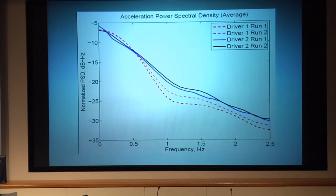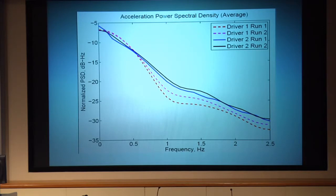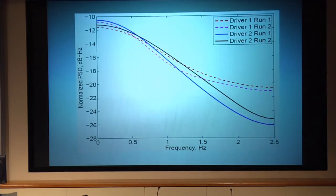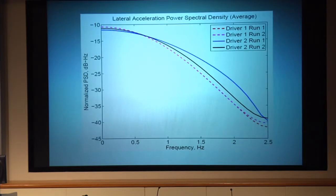We took a power spectral density of the acceleration across several different accelerations and averaged them together. And indeed, you do see a demarcation — a difference between the two students. There's enough of a difference that as you gather more data, you could determine there's a strong personality to the way each person drives. We're working with the same car here, but we hope to see this personality expressed through different vehicles. Here's the deceleration profile — again, you see a difference — and then the lateral acceleration. One of my students liked to minimize his lateral acceleration.